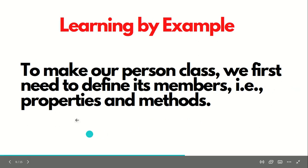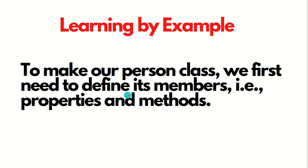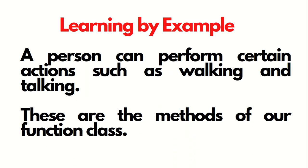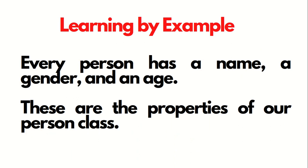We will take one example now. Let's suppose we have to make a person class. We need to first define its members, which will be properties and methods. Every person has a name, a gender, an age — these are the properties of our person class. A person can also perform certain actions such as walking and talking — these are the methods of our person class. This is how we can define both properties and methods.